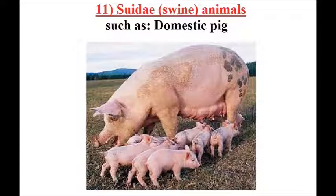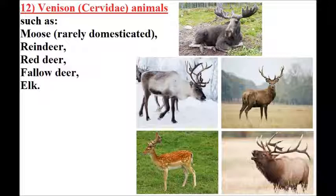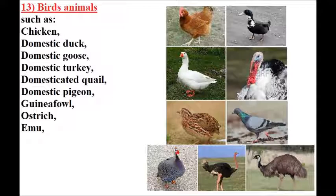12, venison/cervidae animals such as moose, reindeer, red deer, fallow deer, and elk — rarely domesticated. 13, bird animals such as chicken.